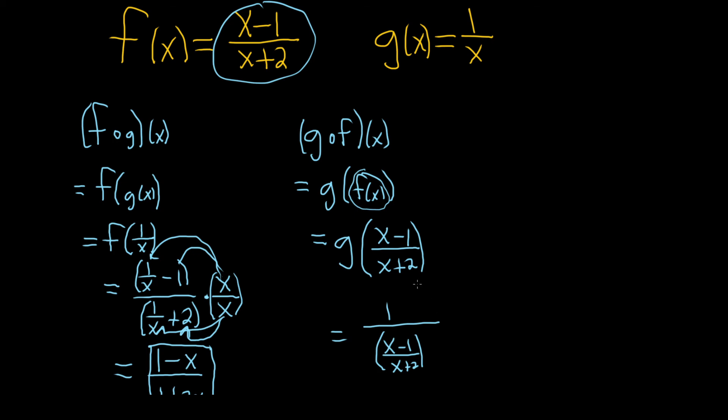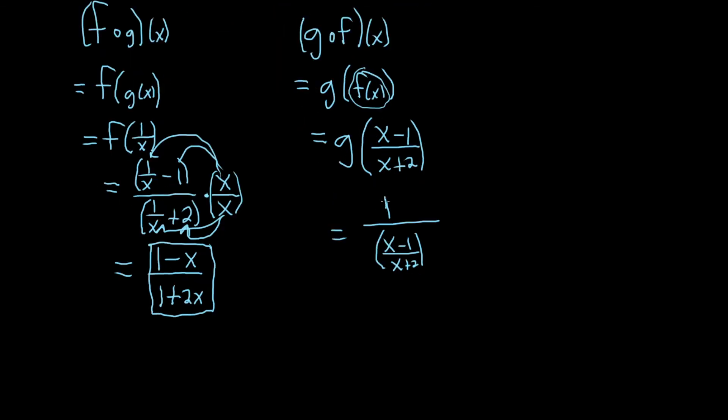And so what's happening here is we have 1. We have the number 1. And we're dividing it by this fraction. So when you divide, you multiply by the reciprocal. So this is really 1 times, and then you flip it. So x plus 2 over x minus 1. And then 1 times anything is that thing. So this is x plus 2 over x minus 1.